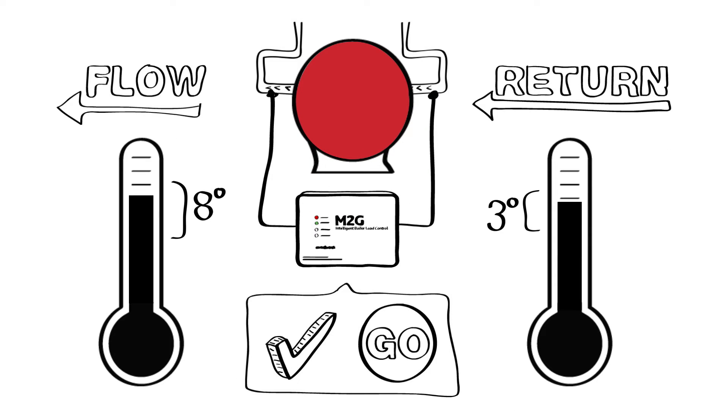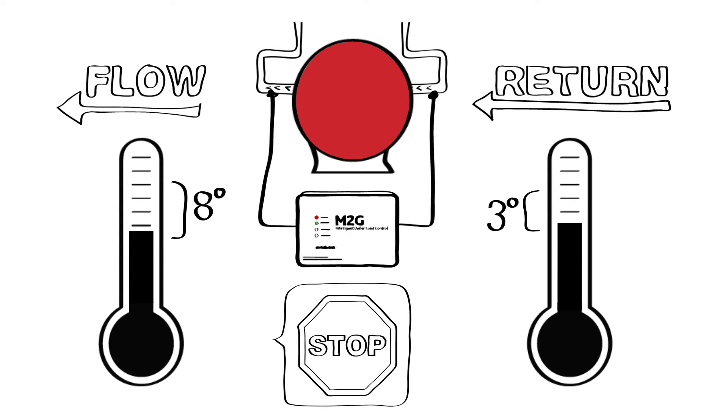If the boiler's temperature gradually decreases in the flow and return and they remain within the dead bands, the M2G recognizes this as natural heat loss and not a real demand. It won't allow the boiler to fire unless the flow drops 8 degrees or the return drops 3 degrees below the initial snapshot reading. The maximum period M2G can prevent the boiler firing is 15 minutes.